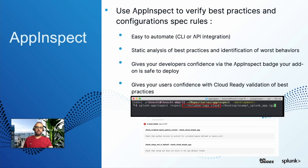The next tool is AppInspect. It is a very powerful tool that helps verify app quality and check content spec rules. It analyzes configuration files and finds possible errors and failures. For Splunk Cloud customers, AppInspect provides cloud-ready validation of best practices. AppInspect can be called using the command line or using the REST API.